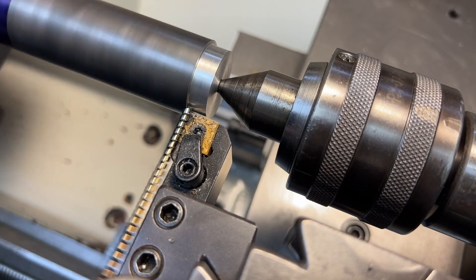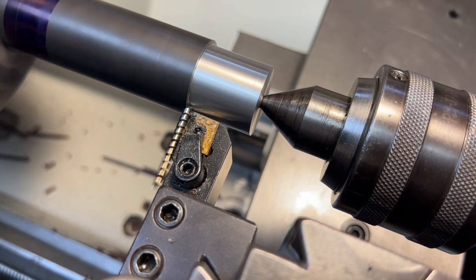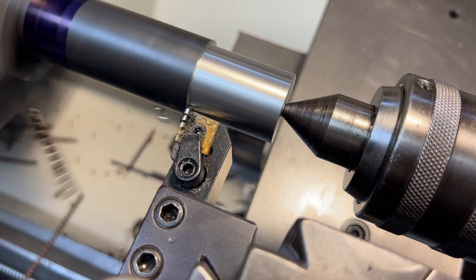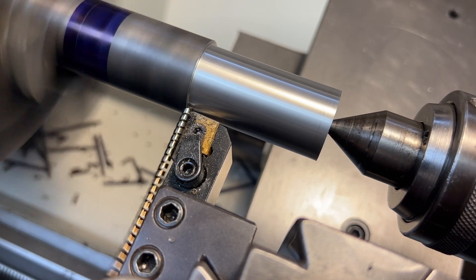We have a fair bit of material to remove to get started. So we will begin by just roughing down this section until we get a little bit closer to our intended diameter.